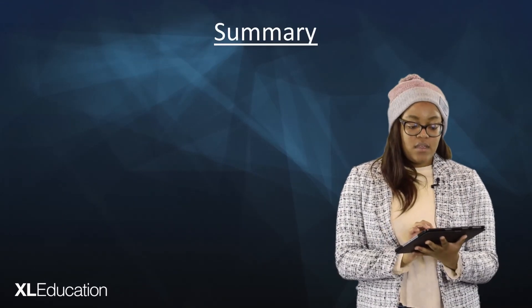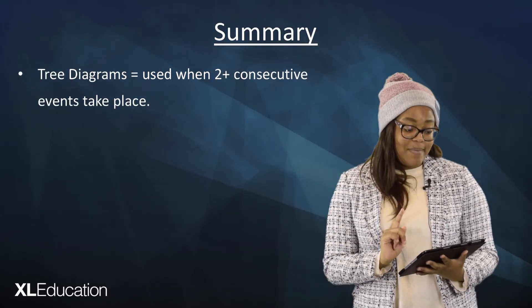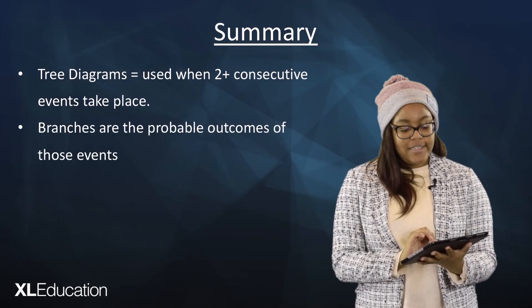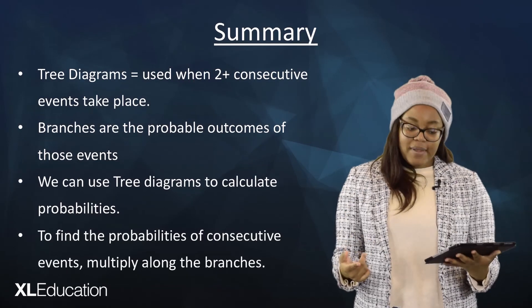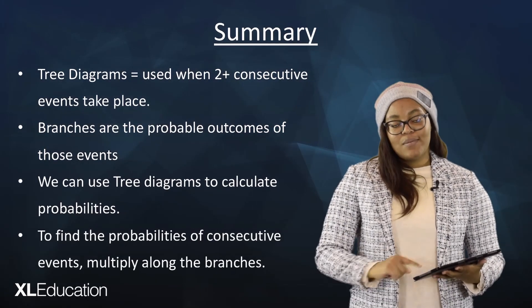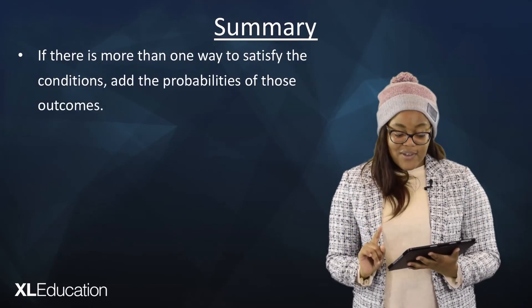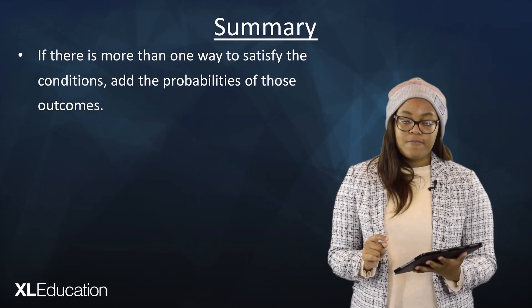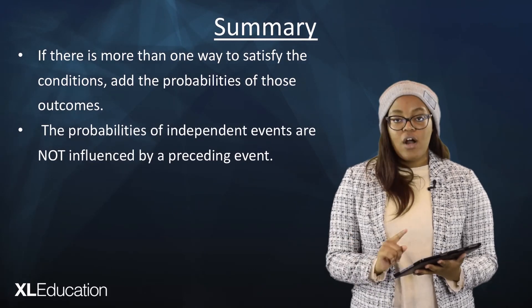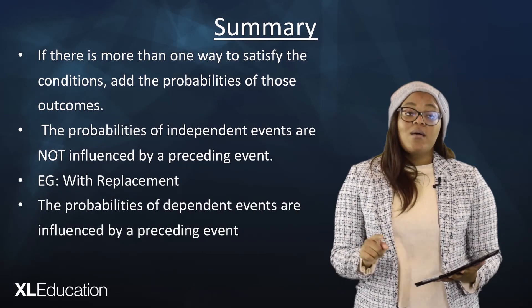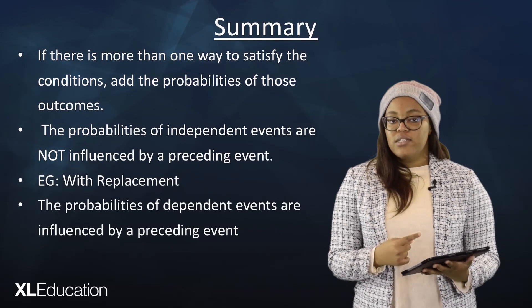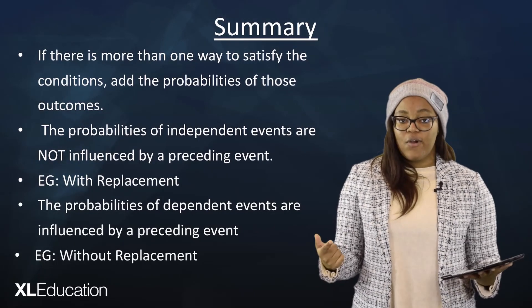In summary: tree diagrams are used when two or more consecutive events take place. The branches represent the probable outcomes of those events. To find the probability of consecutive outcomes, multiply along the branches. If there is more than one way to satisfy the conditions, add the probabilities of those outcomes. Independent events are not influenced by a preceding event — for example, the sweets scenario with replacement. Dependent events are influenced by a preceding event — for example, the sweets scenario without replacement. Money might not grow on trees, but probabilities do.